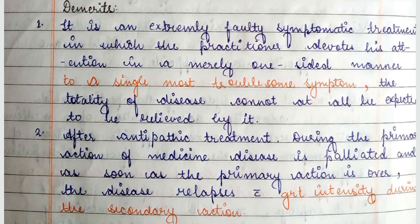The second example is digitalis given for slow pulse in a cachectic individual. Digitalis is given, and during the primary action the pulse rate will increase temporarily. But during secondary action, because the pulse is very weak and the patient is debilitated, the outcome can be so fatal that it can cause death.